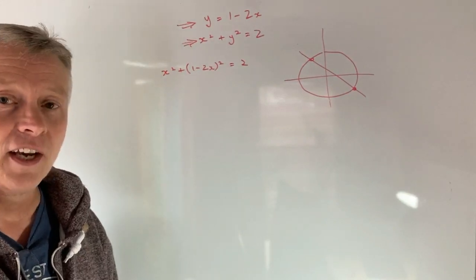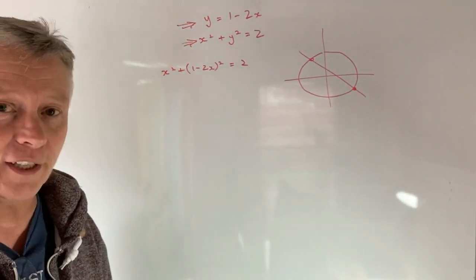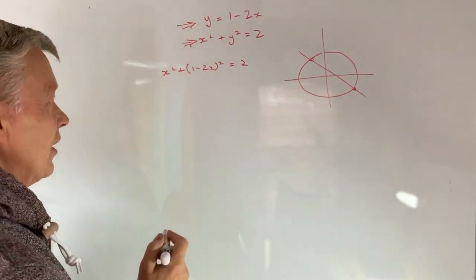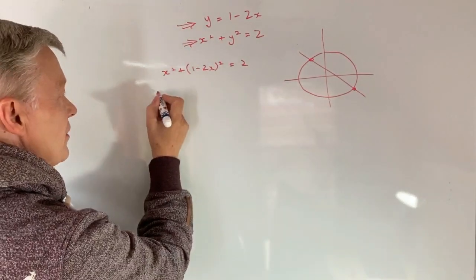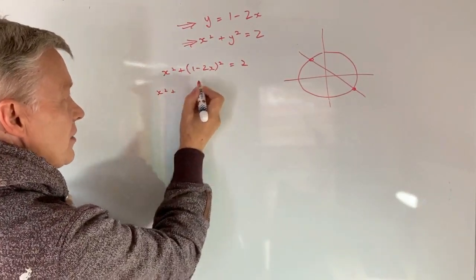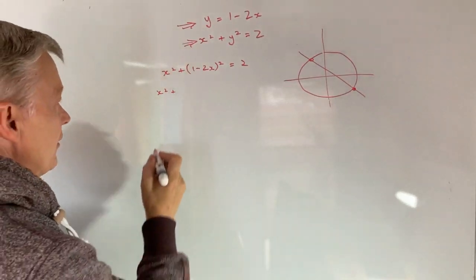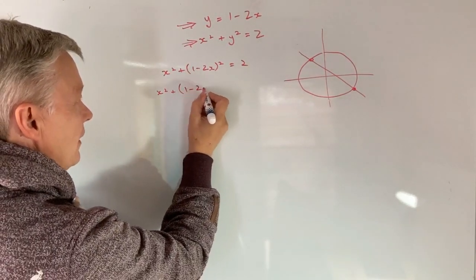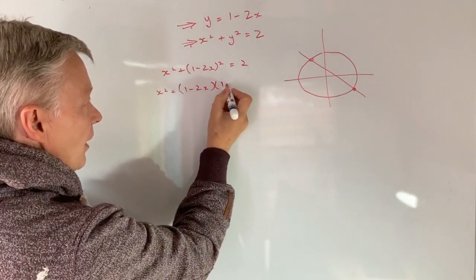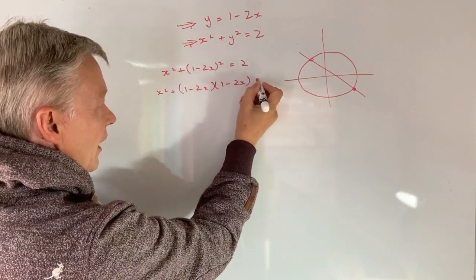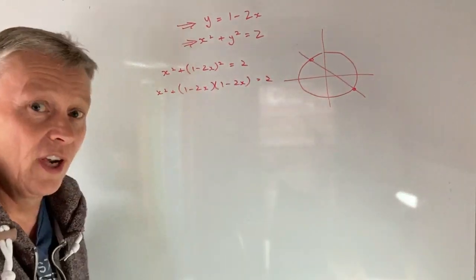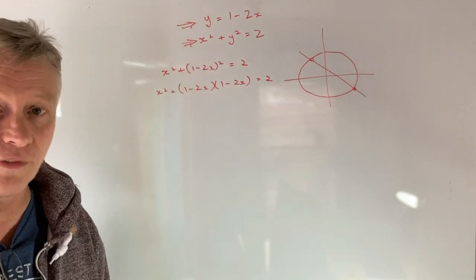So get the value of x and then when we've got that we can find the value of y. So let's have a look at expanding this. So I'm going to get x squared plus and 1 minus 2x squared is exactly the same as saying 1 minus 2x multiplied by 1 minus 2x. And that all equals 2. Don't forget that equals 2 at the very end.